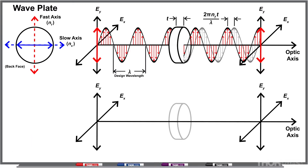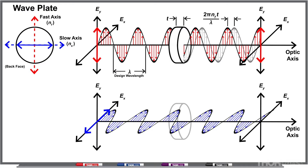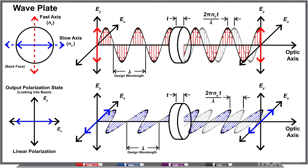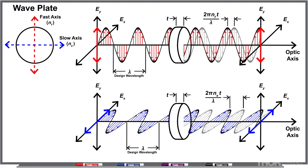If you have linearly polarized light that's parallel to your slow axis, then you'll get that same linearly polarized light through your wave plate. However, the wave will be delayed by an amount proportional to the refractive index parallel to the slow axis and the thickness of the wave plate. Now the wave plate has what's called a retardance, and the retardance tells you how much more of an offset you have due to the slow axis compared to the fast axis.